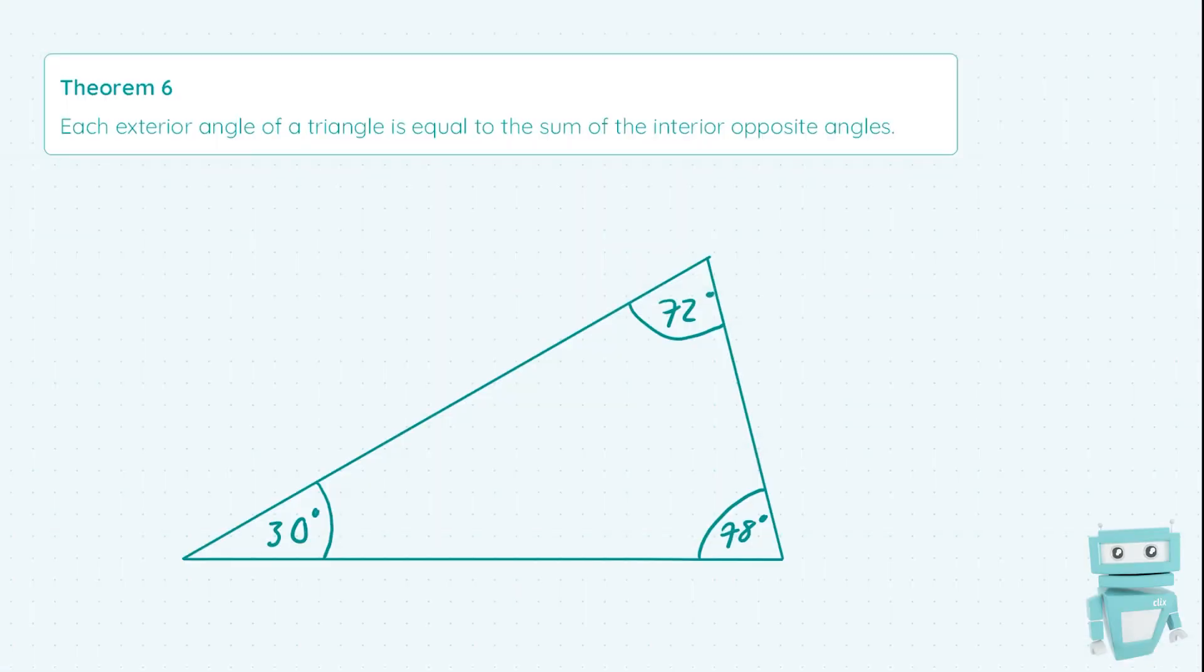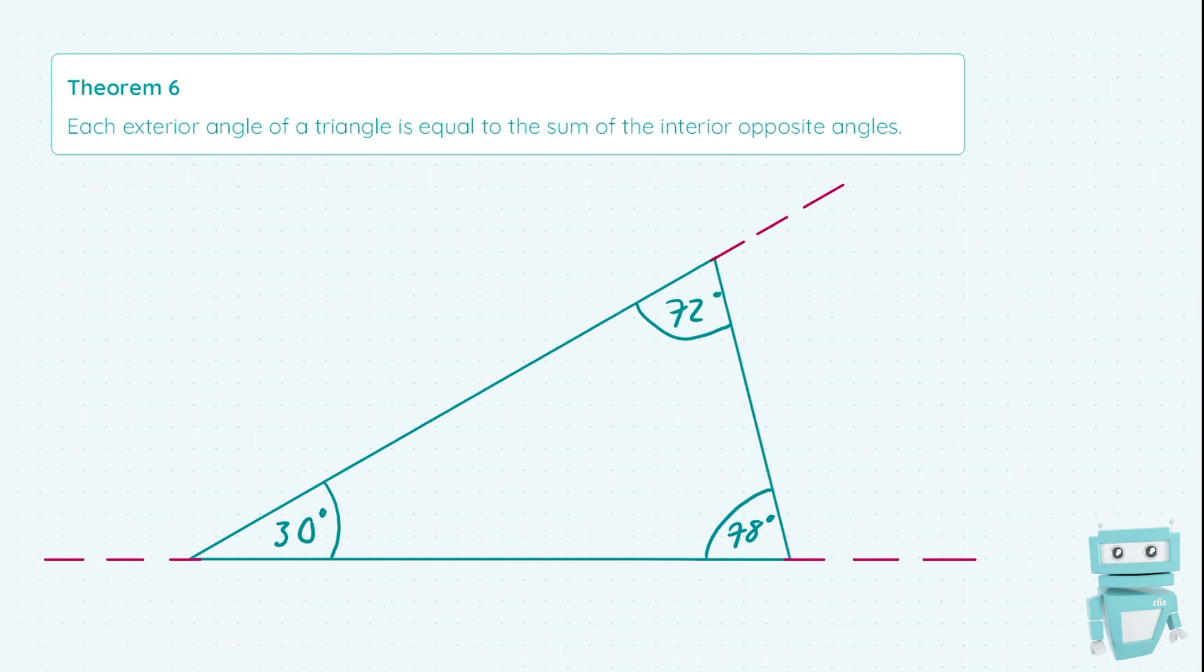So as you can see we've got a triangle here, and we're going to begin by extending some of the side lengths using dotted lines, like so. Now we're just going to take an example.